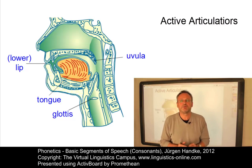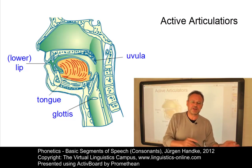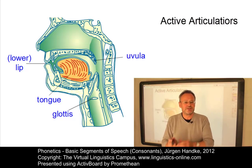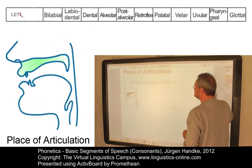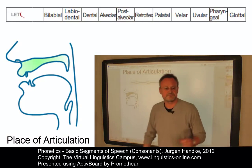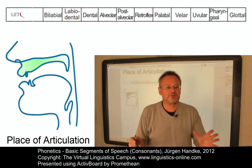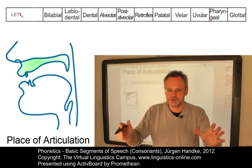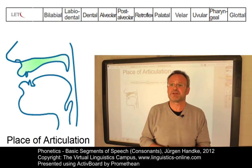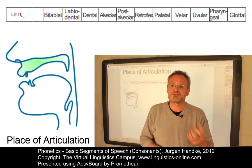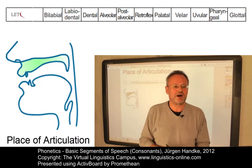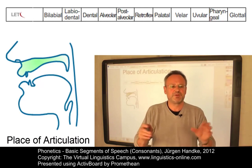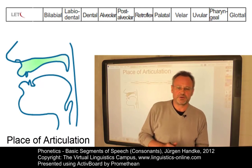The position where the contact between an active and a passive articulator is produced is referred to as the place of articulation. I will now demonstrate one fricative consonant — a consonant which produces a turbulent airflow — per place of articulation, produced between two vowels for better audibility.